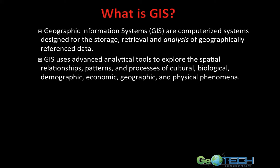Geographic information systems are computerized systems designed for the storage, retrieval, and analysis of geographically referenced data. GIS uses advanced analytical tools to explore the spatial relationships, patterns, and processes of cultural, biological, demographic, economic, geographic, and physical phenomena. All of those items have in common a spatial relationship, a spatial context. Anything that has a spatial context associated with it, we can use GIS to study it.